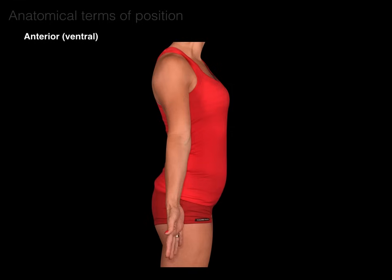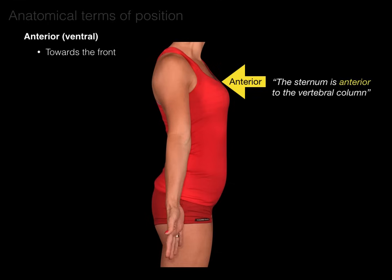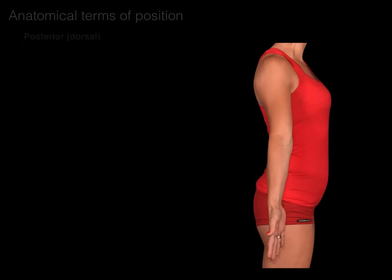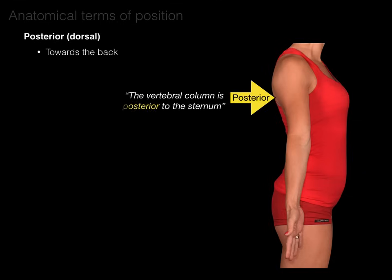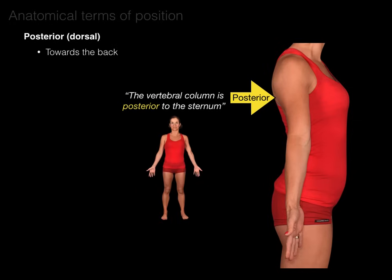Let's do each of them individually. Let's start with anterior — and in gross anatomy another term is ventral — which means towards the front. For example, the sternum is anterior to the vertebral column, or the sternum is ventral to the vertebral column. In contrast, there's posterior or dorsal, which means towards the back. For example, the vertebral column is posterior to the sternum, or dorsal to the sternum. This is always in relation to the anatomical position.